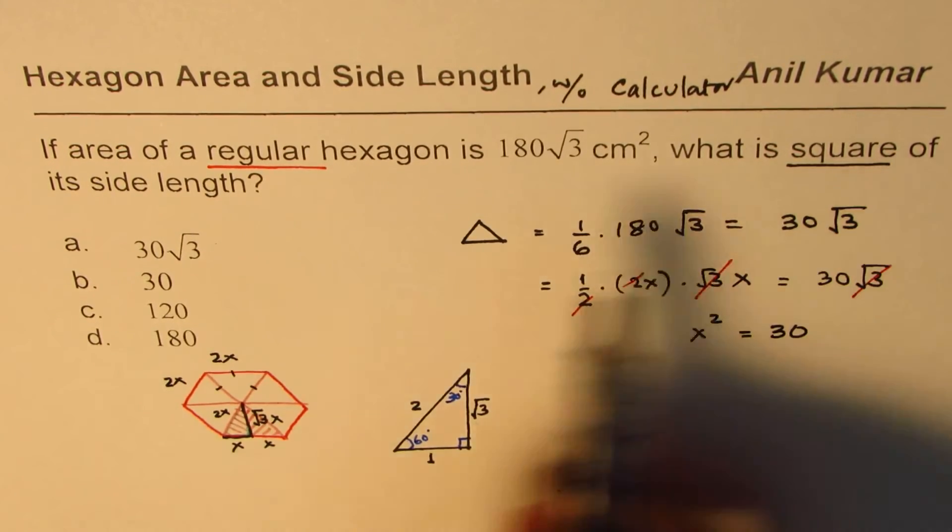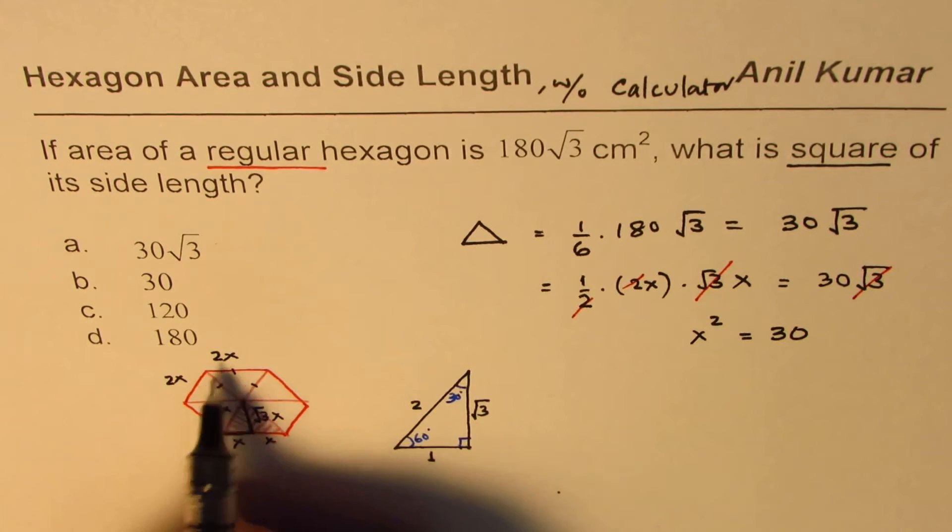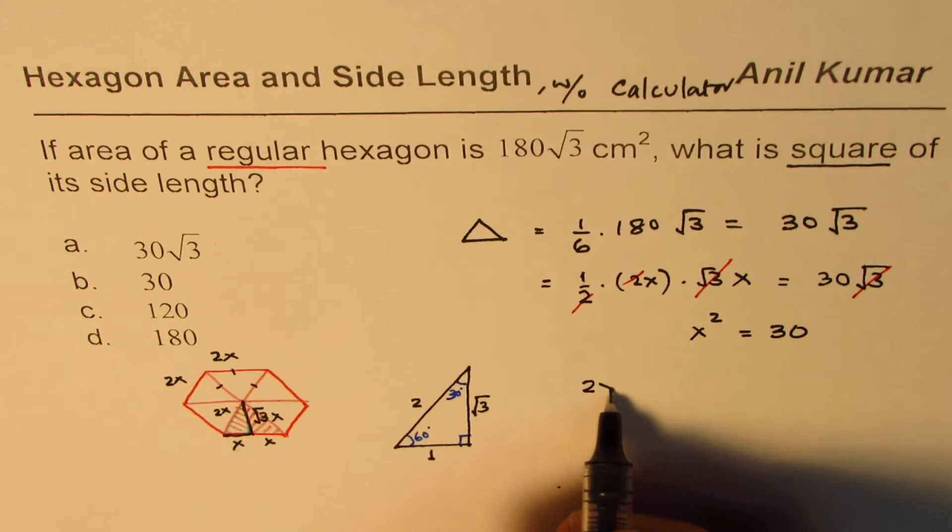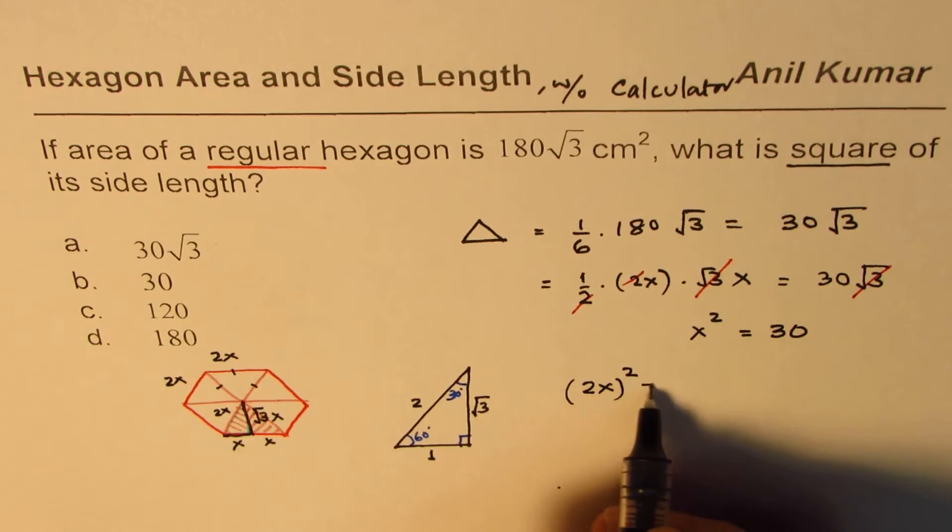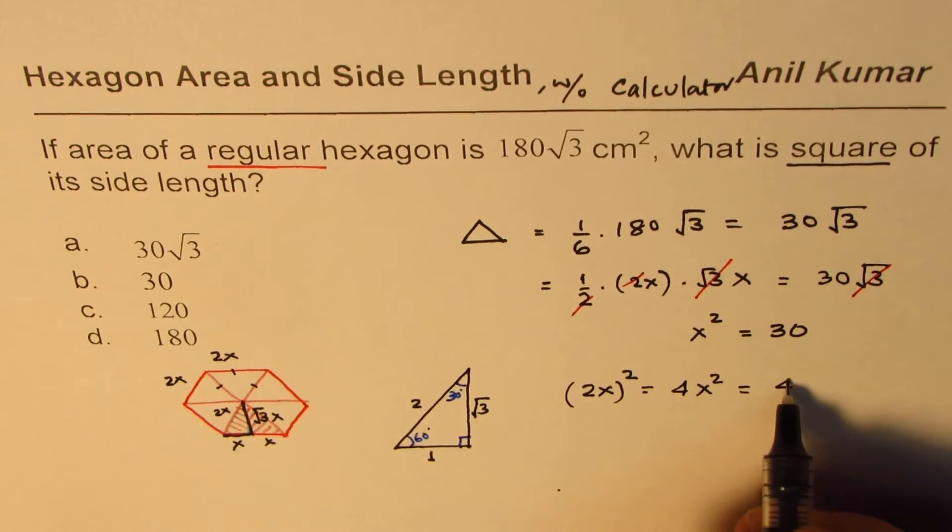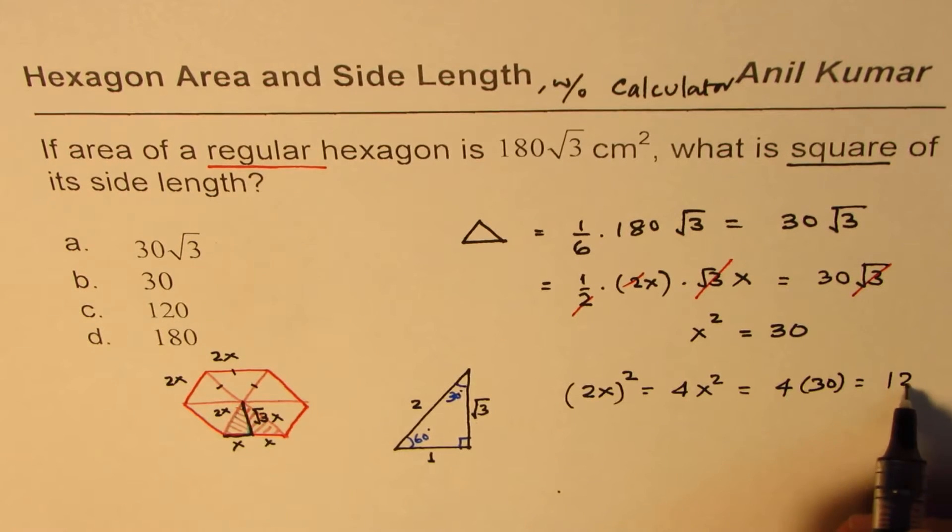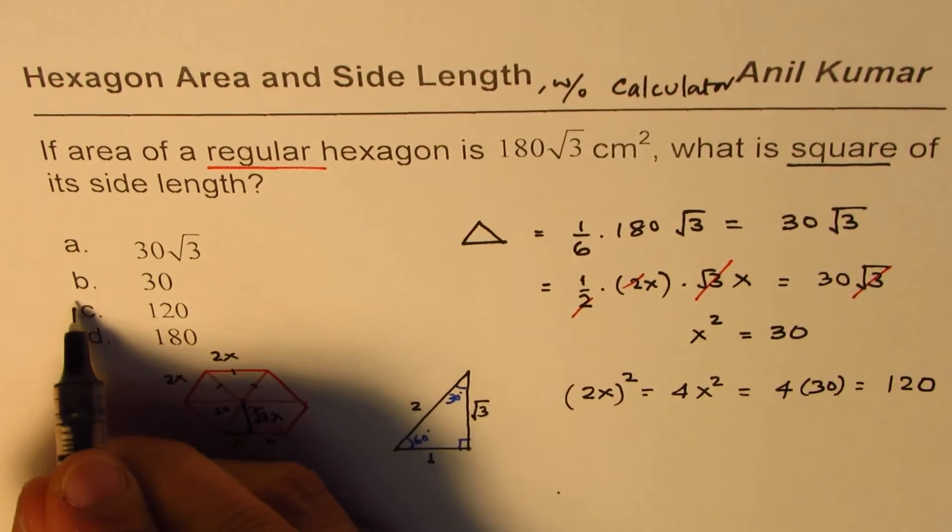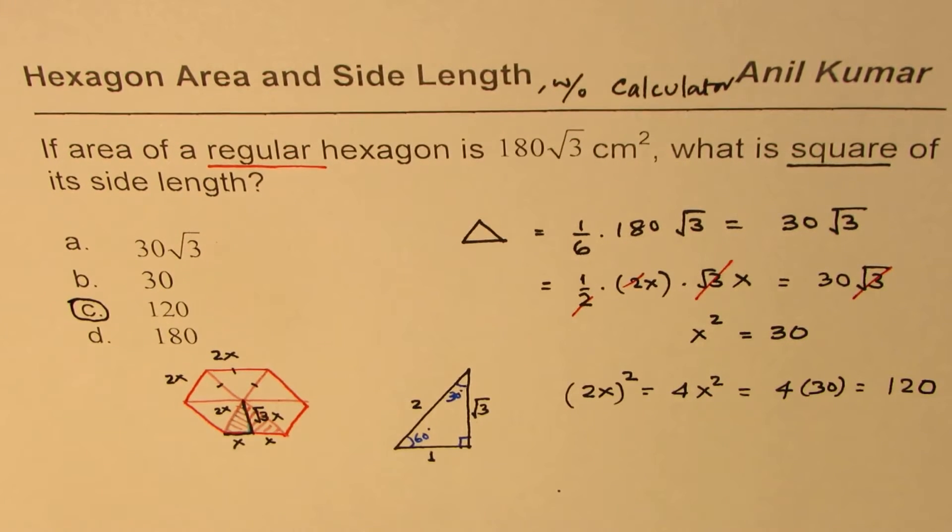What do we need to find? We need to find square of side length. What is square of side? Side length is 2x, so we need to find what is 2x whole square, which is 4 times x squared. So that would be 4 times 30 or 120. So the correct answer is C, and that is how you get it.